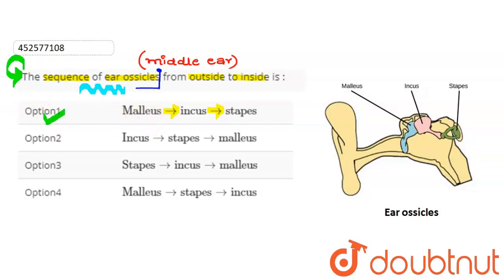The first option is: Malleus, incus, stapes. This is our first option here, and it is correct.